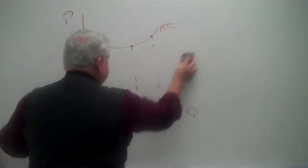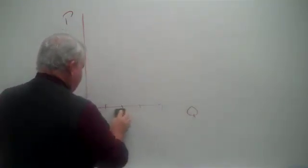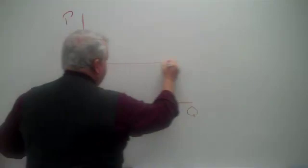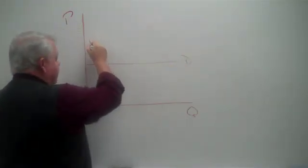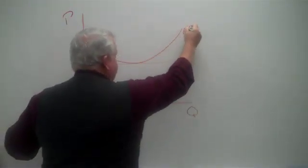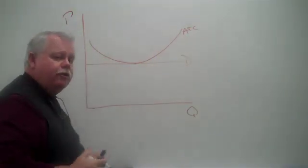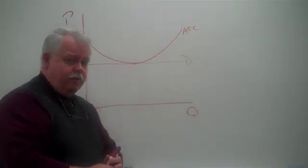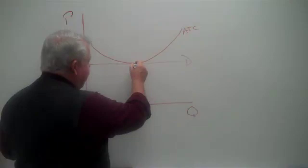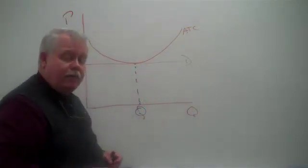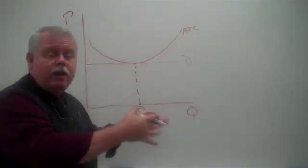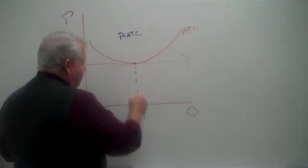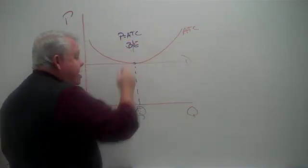Let's try this one. What if you saw this? There's the demand curve. There's the average total cost curve and they barely touch each other right there. What can you tell me about this company? What's the best they can do? At their very best level of output, if they happen to be right here, what will happen? Are they making a loss, taking a loss, making a profit, breaking even? Well, price equals average total cost. So at this level of output, they are breaking even.